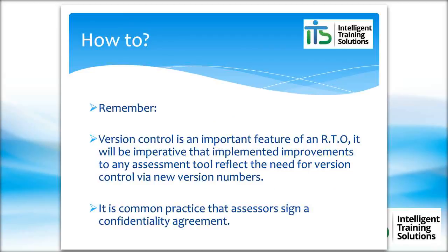Remember, version control is an important feature of an RTO. It will be imperative that implemented improvements to any assessment tool reflect the need for version control via new version numbers. You'll notice at the bottom of all our assessment tools it shows 2016.1, 2016.3, 2017.1, or 2017.2. Any improvement made to those assessments means the version goes from version one to version two — however many improvements you've made across the life of that assessment tool.